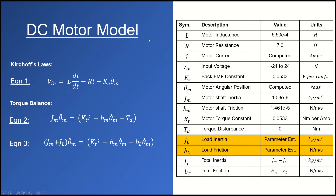Next I'll cover the equations used to construct the Simulink model. Equation 1 and Equation 2 come from the MathWorks website. Equation 1 is based on Kirchhoff's laws — the electrical part of the DC motor — where the voltage input equals the voltage across the inductor minus the voltage across the resistor minus the back-EMF voltage. Equation 2 is a torque balance equation that computes the angular acceleration of the motor as a function of shaft inertia and frictional losses.